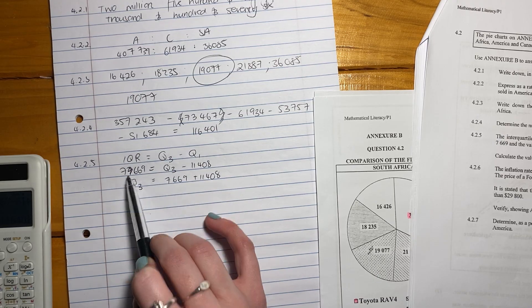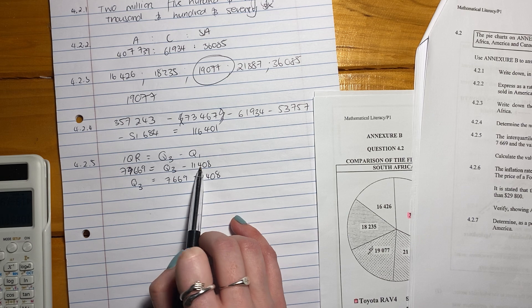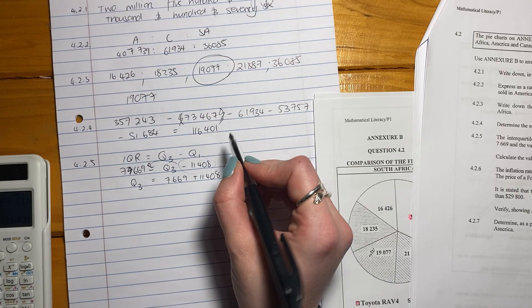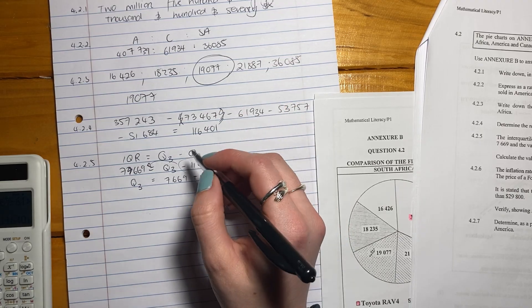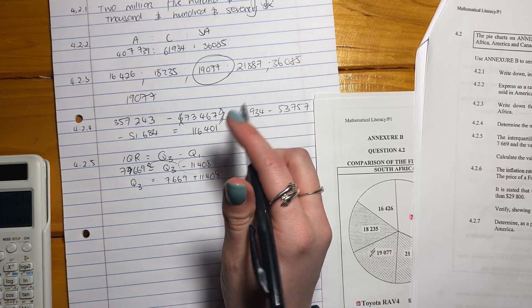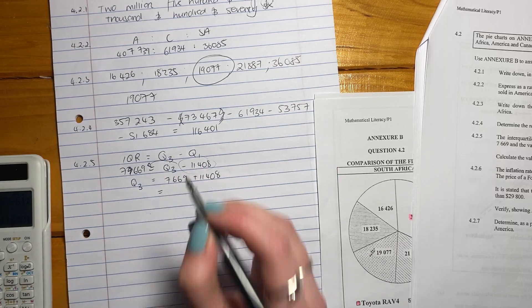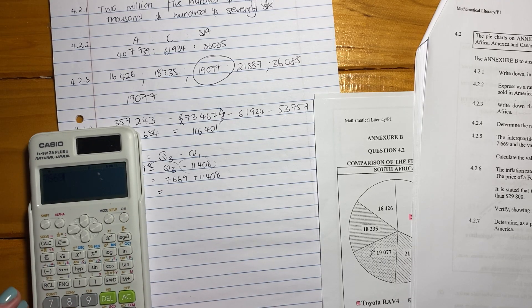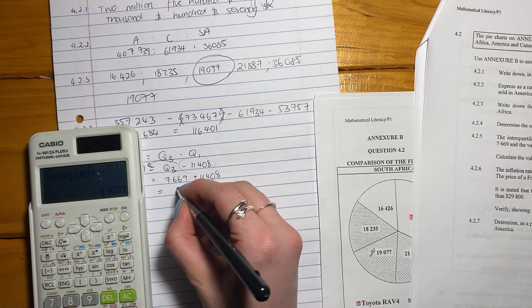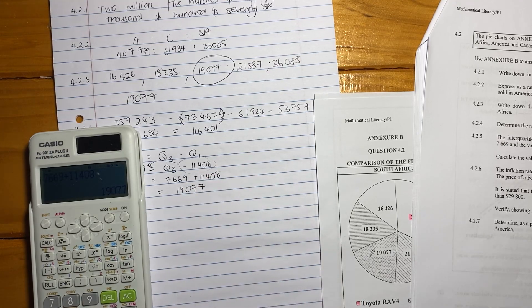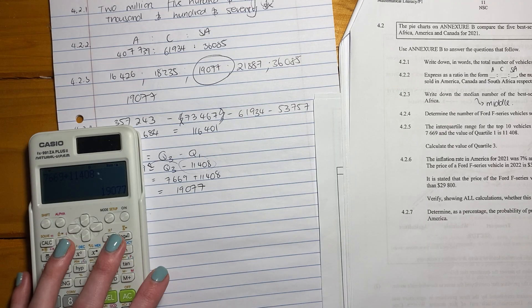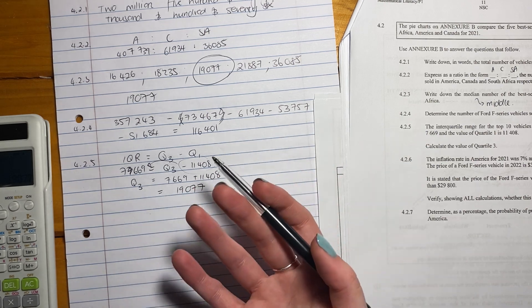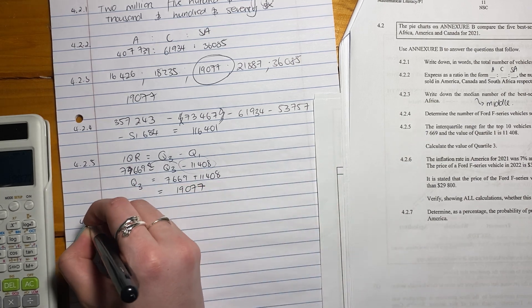So you should be thinking, if I bring this number here over to this side, because I want to get quartile 3 by itself, remember from basic algebra. You could be saying, oh, I'm doing mathlit because I don't want to do algebra, but this is just basic logic. If I bring it over, it has to become plus. So now quartile 3, then it's just those two amounts added together. So add that together and that is your answer. So it's 19,077. The biggest thing here is they're wanting you to go back to basics and also show that you can manipulate what's there.